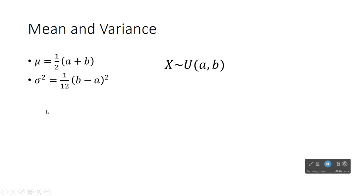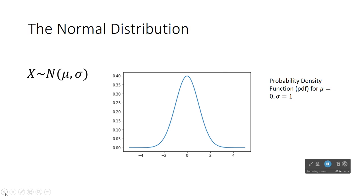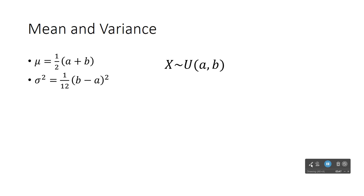We have formulas for uniformly distributed random variable, and these formulas, you can see their derivations if you ever take a course in mathematical statistics. If x is uniformly distributed between a and b, its mean is one half of a plus b. So that's just directly in the middle.